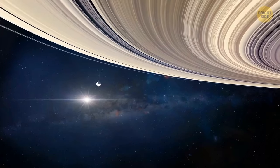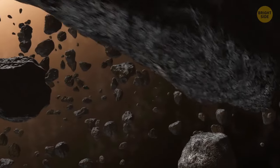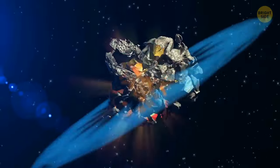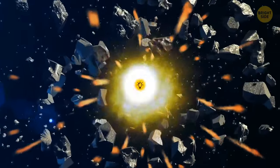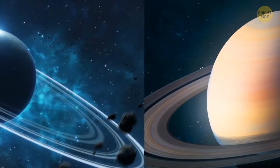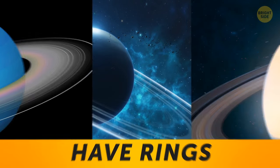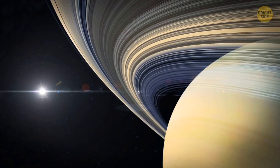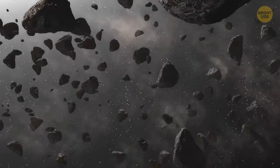Saturn's magnificent rings are a belt of space debris that formed after one of its moons fell apart. Jupiter, Neptune, and Uranus also have rings, although not as splendidly as Saturn's. And even some asteroids have them too.